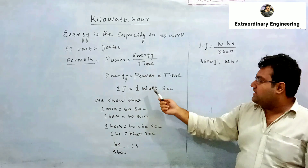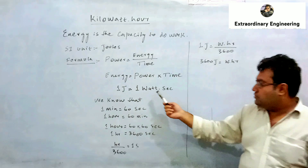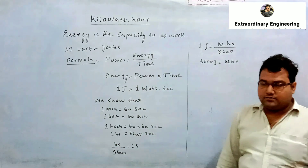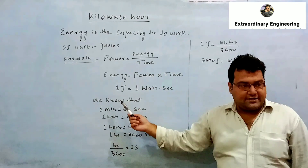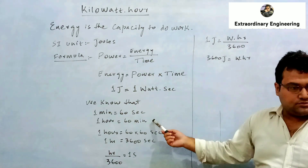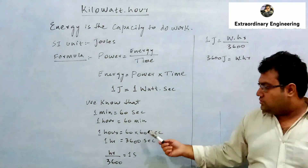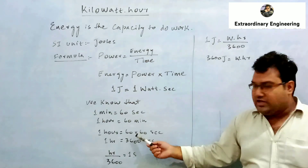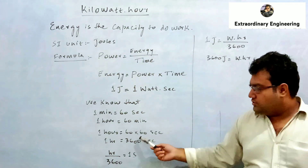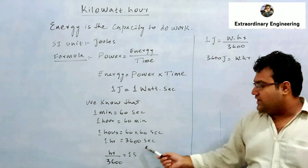The standard unit of energy is joules, the standard unit of power is watts, and the standard unit of time is seconds. So, 1 joule = 1 watt·second. We also know that 1 minute = 60 seconds and 1 hour = 60 minutes, so 1 hour = 60 × 60 = 3600 seconds.